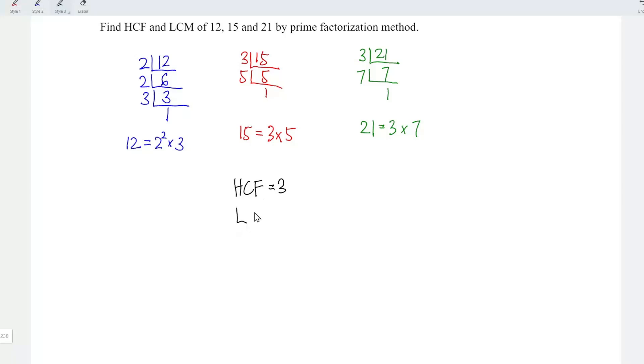And now proceed to lowest common multiple. What I'm going to do here is write whatever prime factors that we are able to see here. We have 2. We have 3. We have 5 and 7. Next is compare. For the prime number 2, the highest power that we are able to see here is 2 itself.